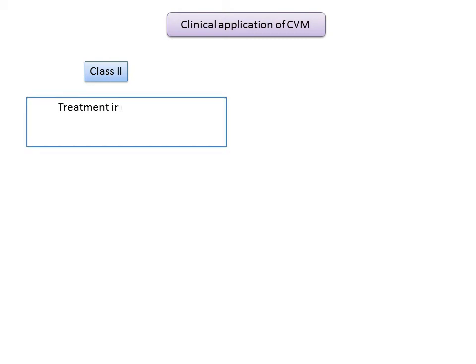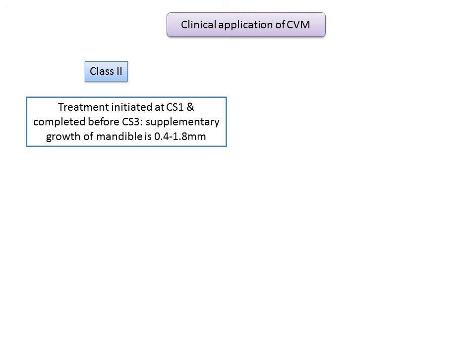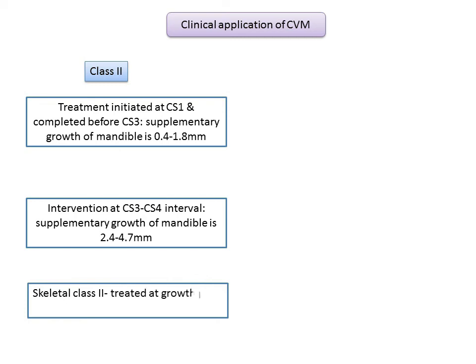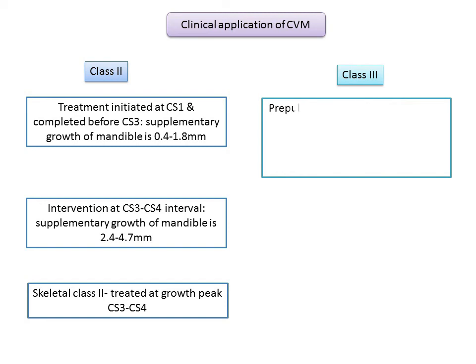Clinically, when Class II molar occlusion is treated too early — that is, when therapy starts at the first stage and is completed before the interval of peak velocity mandibular growth (before CS3) — the net supplementary growth of the mandible ranges between 0.4 and 1.8 millimeters. When intervention in a Class II patient includes the CS3 to CS4 interval (the interval of the growth spurt), the net supplementary mandibular growth ranges from 2.4 to 4.7 millimeters. Therefore, treatment for skeletal Class II should be done at the growth peak, CS3 to CS4.